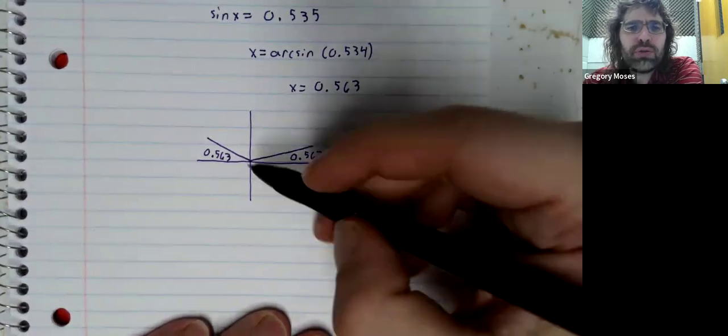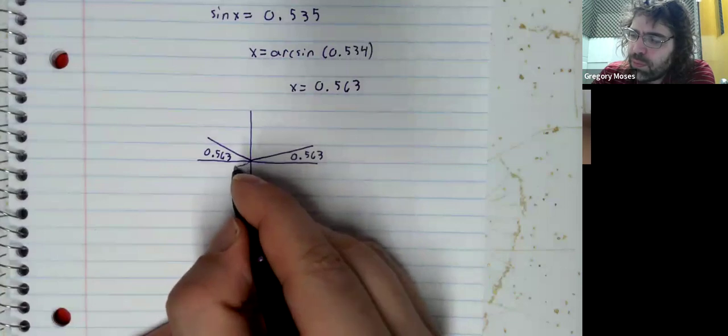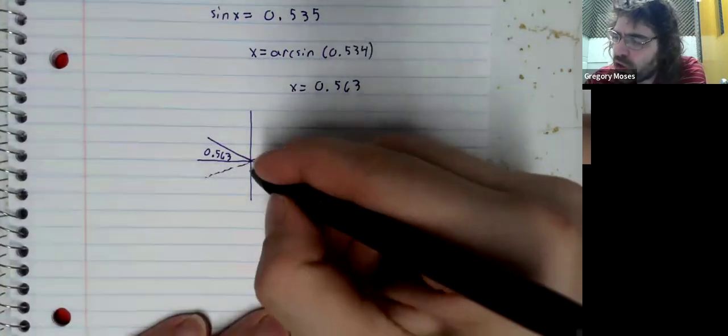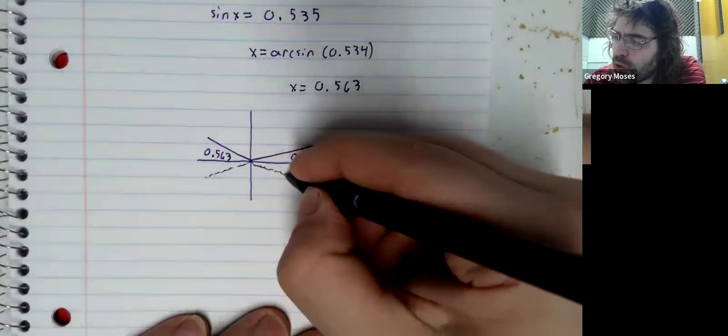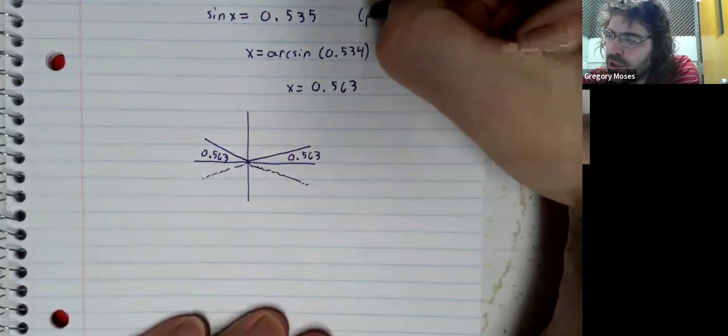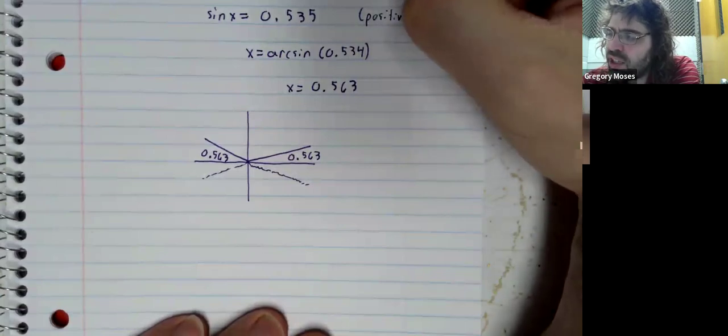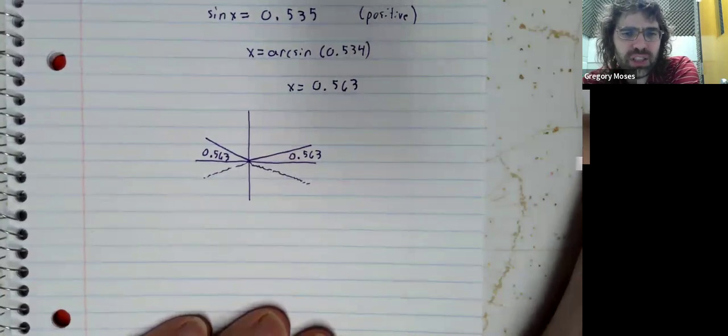Then we use reference angles to get another solution. Again, we're using this reference angle. But not that reference angle. Or that reference angle. Because we're looking for places where the sine is positive.